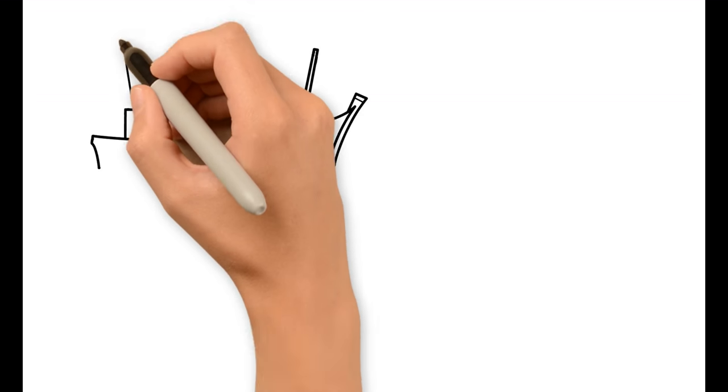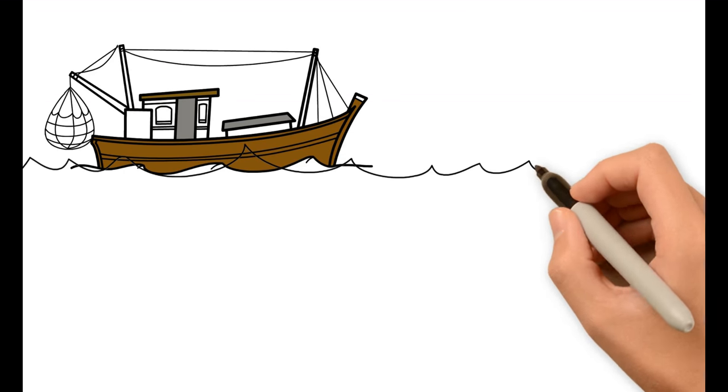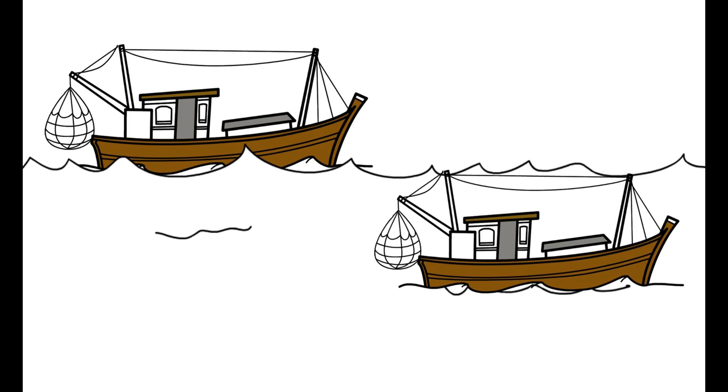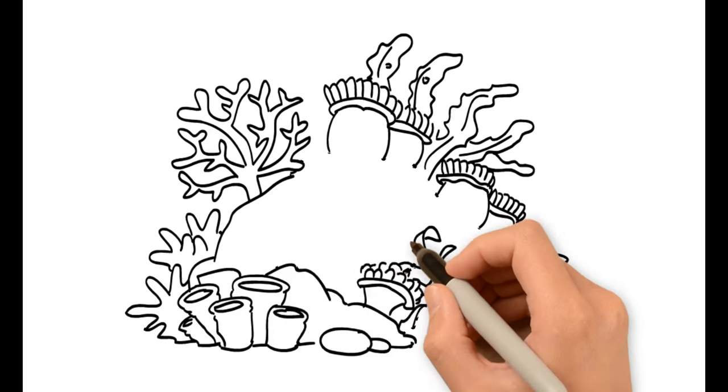5. Fishing. Currently, too much fishing takes place in the oceans. The fishing net harms the corals, and in addition, the balance between species is changed, affecting corals.